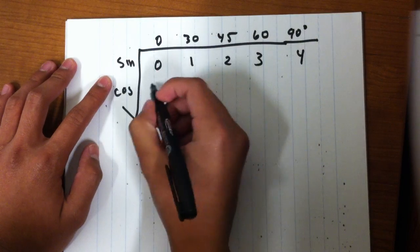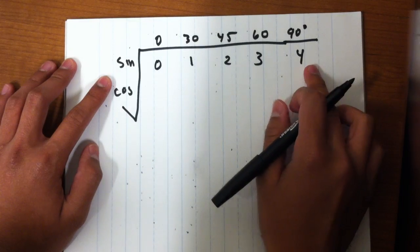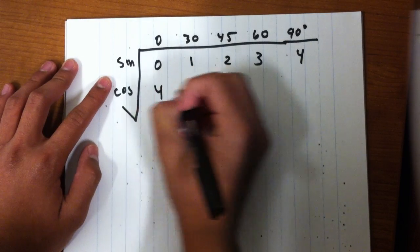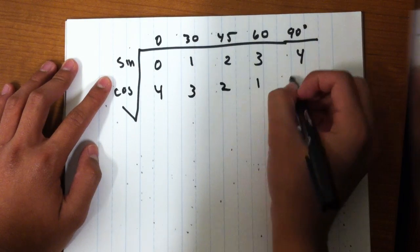And for cosine, you do the same but in reverse. So you start with 4 and you decrease: 4, 3, 2, 1, 0.